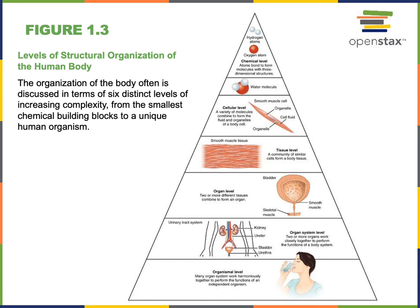An organ like the urinary bladder consists of two or more different tissues. The urinary bladder contains smooth muscle tissue, as well as an inner layer of epithelial tissue that forms the lining to help contain urine, some connective tissue that helps support the structure, and nervous tissue responsible for sensing the stretching of the bladder as it fills with urine and stimulating contraction of the smooth muscle to empty the bladder.